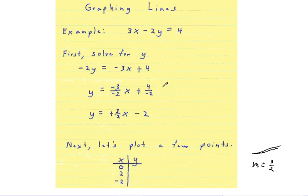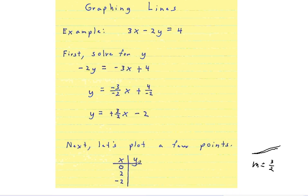The next thing we want to do is plot a few points and then finally graph the line. So that's what I'm going to do next. And I'm arbitrarily going to pick a few points that I think will be easy to calculate when I put them in for x. I'm going to pick 0, 2,